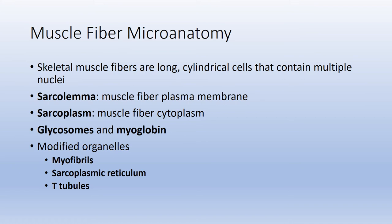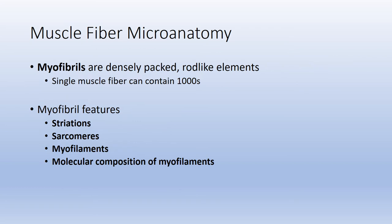Two more components of a muscle fiber are glycosomes and myoglobin. Glycosomes — hearing glyco, think glycogen — are tiny bubbles filled with glycogen in a muscle fiber. Muscle fibers use glycogen or sugar as an energy substrate to produce ATP. Myoglobin functions in oxygen storage in muscle fibers. There are also several modified organelles, including myofibrils, the sarcoplasmic reticulum, and T-tubules. We will first cover myofibrils, then the sarcoplasmic reticulum and T-tubules toward the end of the lecture.